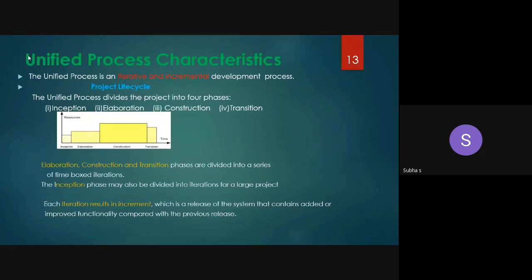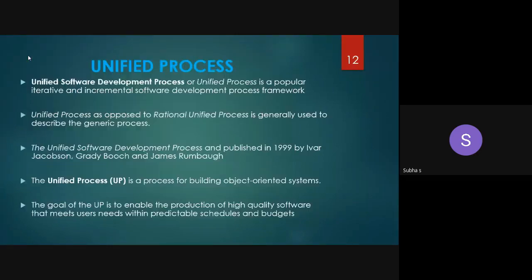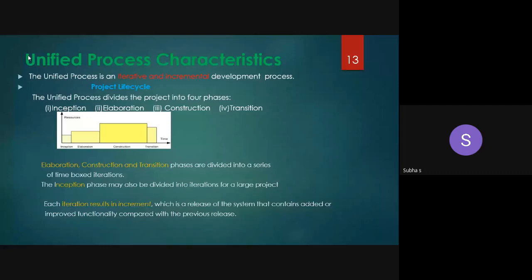These are the different phases in the Unified Process, which we will see in detail in the next class. The four important phases are: Inception Phase, Elaboration Phase, Construction Phase, and Transition Phase. We will see the function of all these phases in detail later.